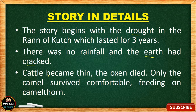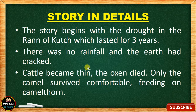Cattle became thin because of the lack of food. Oxen died. Only camels survived comfortably because they fed on camel thorns, a type of bush which camels eat in the desert. Camels are quite comfortable in desert areas, so they survived very comfortably feeding on camel thorns. This is the situation of the Rann of Kutch as described by the author.